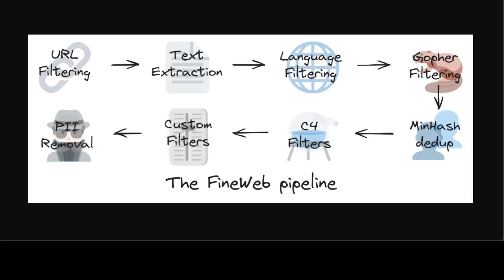In step two, they did base filtering, applying URL filtering to remove adult content. They used a fastText language classifier to keep only English text with a score greater than 0.65, then applied quality and repetition filters from MassiveText. After applying these filters, roughly 36 trillion tokens of data remained. Then they started the process of deduplication, using MinHash deduplication per crawl snapshot to identify and remove duplicate content.